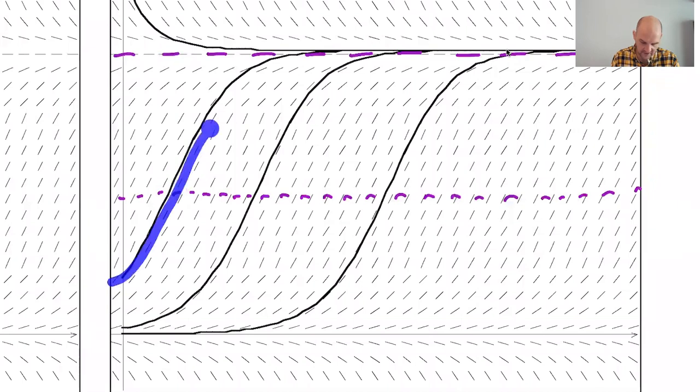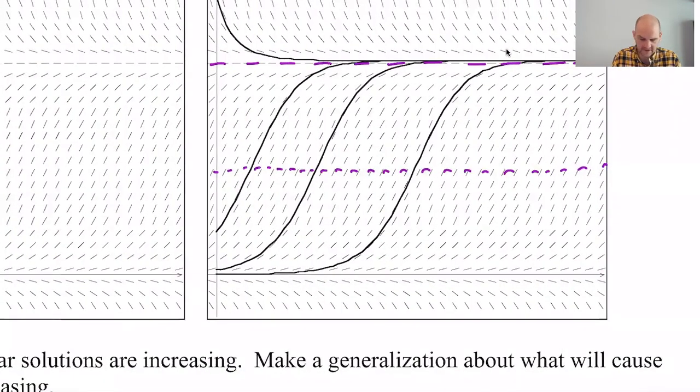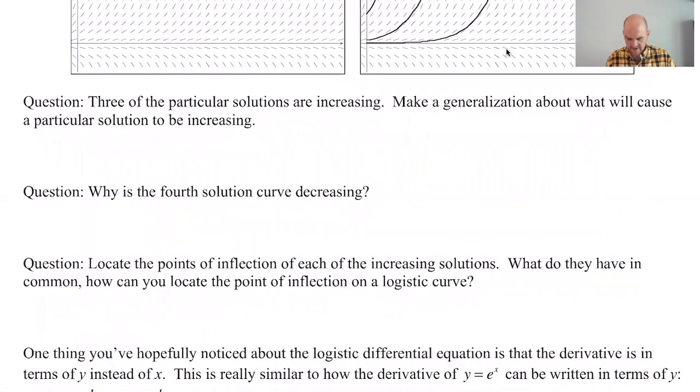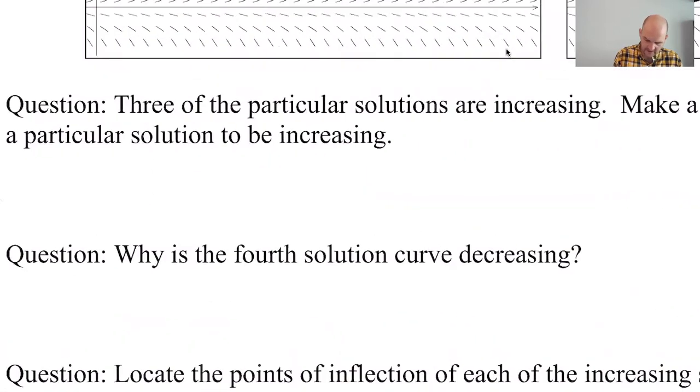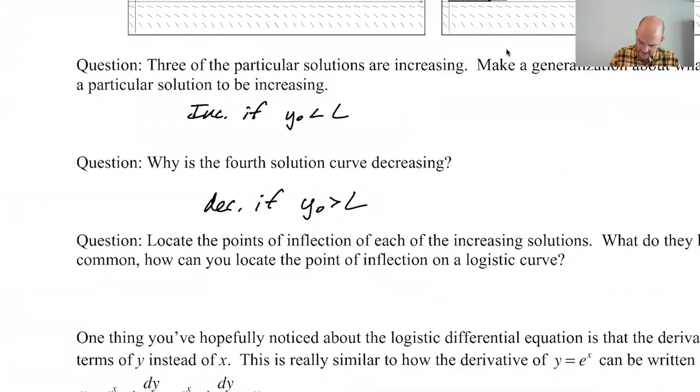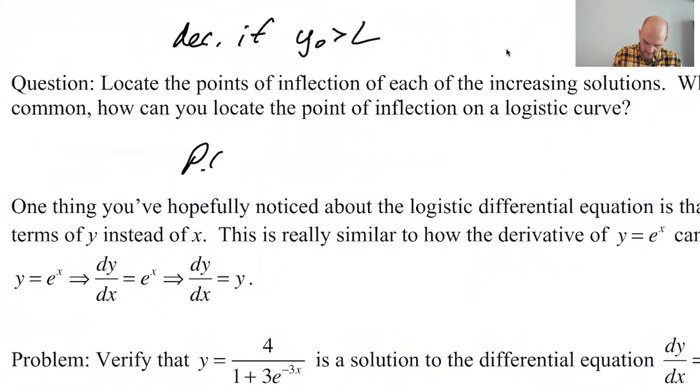Sometimes the limit's called the carrying capacity. If you start out below, things are going to grow until you get closer, and then you're going to even off. You never quite get there by the model. I mean, I guess in the real world, that could actually happen, and you do get there, but not in the model. All right, so three of them are increasing. You will get an increasing solution if Y sub 0 is less than L. The fourth one, you'll get a decreasing solution if Y sub 0 is greater than L. Then the points of inflection, POI at Y equals L over 2. So it's in terms of L.